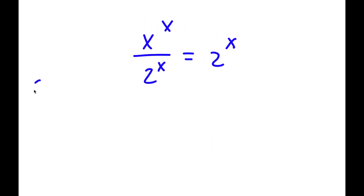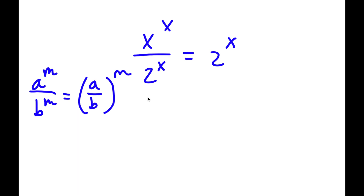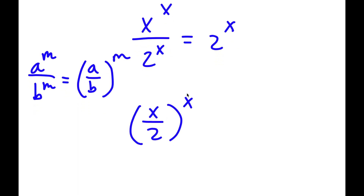Now, if I have something in the form a to the power of m over b to the power of m, this is equal to a over b to the power of m. So x to the power of x over 2 to the power of x is going to be equal to x over 2 to the power of x, which is equal to 2 to the power of x.